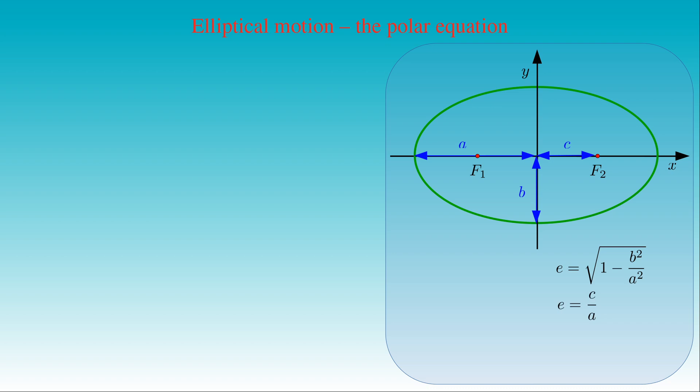If the point P denotes the instantaneous position of a body moving on the ellipse, then we can measure the distance of the point P from the fixed points or foci of the ellipse. By definition, the sum of the distances F1P and F2P is equal to 2 times the length A of the semi-major axis of the ellipse. Now we can choose any of the foci as the reference point of the motion.